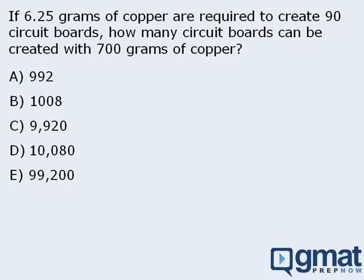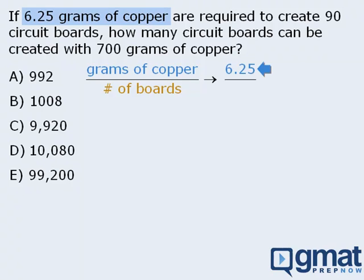As the title of this video suggests, we can use ratios to solve this question because we are comparing grams of copper to the number of circuit boards that can be created. Now the question tells us that for every 6.25 grams of copper, we can create 90 circuit boards.